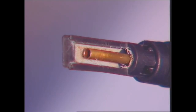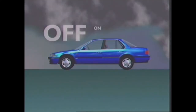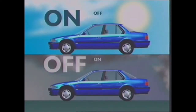The fixed orifice tube cannot alter the amount of refrigerant entering the evaporator. Therefore, as extra cooling is required and the heat load on the system increases, the compressor cycles on for longer periods. As the heat load decreases, the compressor cycles off for longer. This cycling adjusts the system to the heat load.